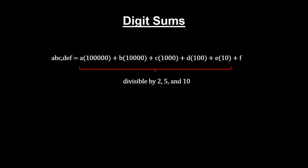It's the base ten system that makes this work. For example, we can write the number ABCDEF as the sum of its positional digits. With this view, we can see that the numbers two, five, and ten divide evenly into each of the terms except possibly the last digit, F.